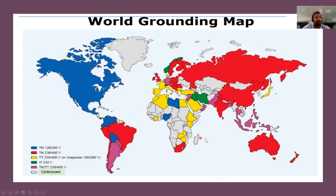Looking at a world map showing how different earthing systems are adopted globally: in the United States, the TN system is used at 120/240 volts. Countries like India and Europe at 230/400 volts also majorly adopt the TN system. Most Asian and European countries predominantly use TN. A few African countries adopt the TT system. The IT system is used in very few countries. Some countries use a combination of TN and TT systems.